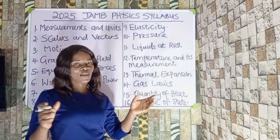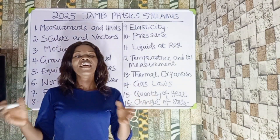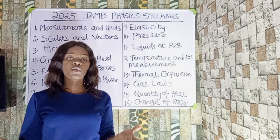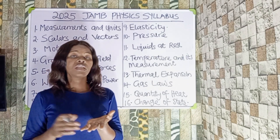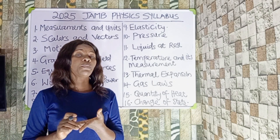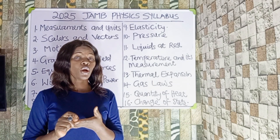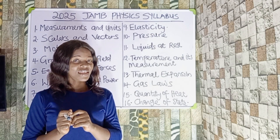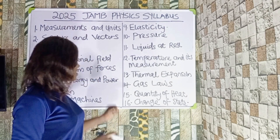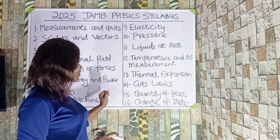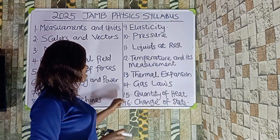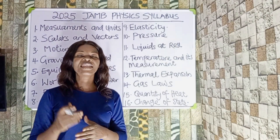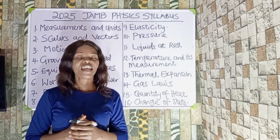The next topic is gas laws. Under gas laws, you should be looking at the three main laws: Boyle's Law, Charles' Law, the Pressure Law, and also the general gas law. Number fifteen is the quantity of heat — under this we should be looking at specific heat capacity and heat capacity.